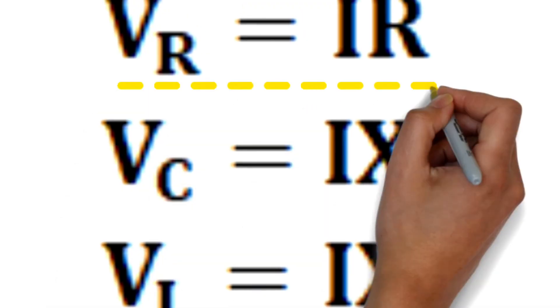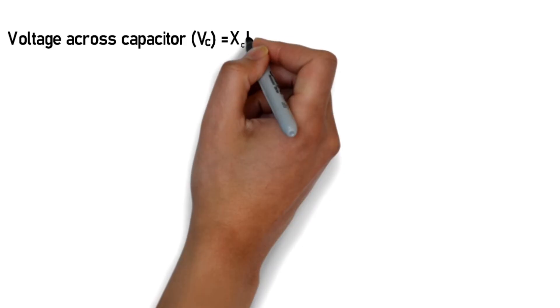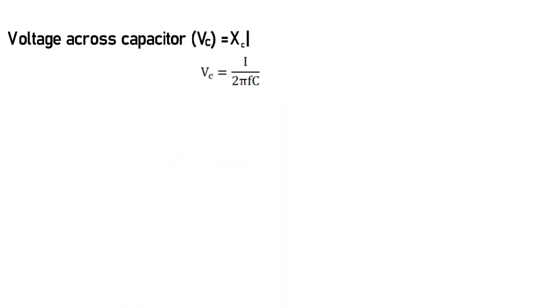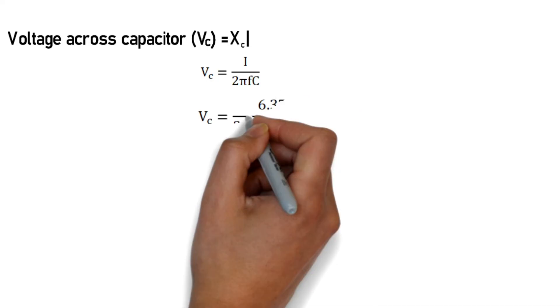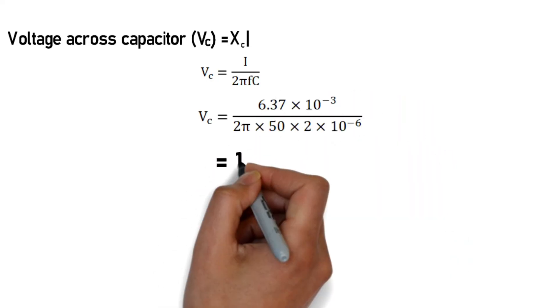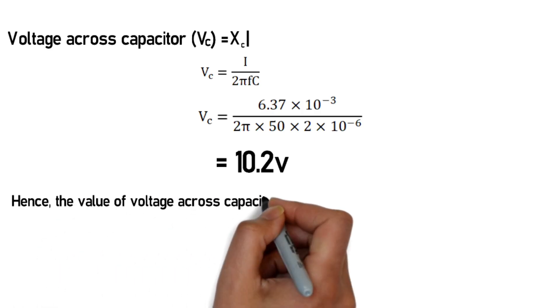For potential difference across capacitor, the formula is Vc = I × Xc. Substituting Xc = 1/(2πfC) and the calculated current value, the potential difference across capacitor comes out to 10.2 volts.